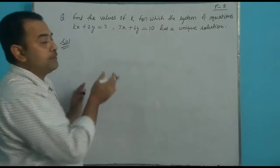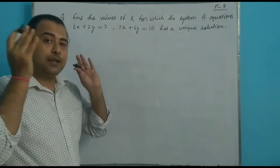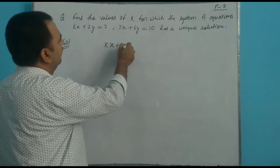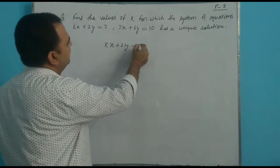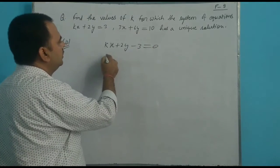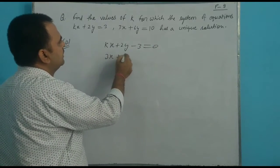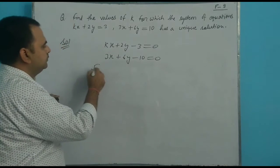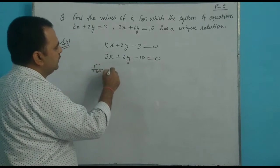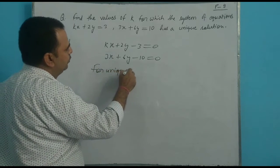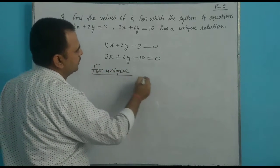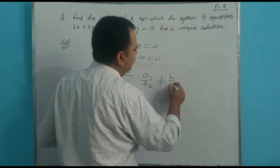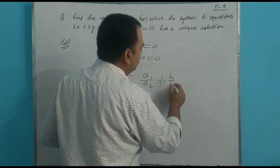We write the equations in standard form: kx plus 2y minus 3 equals 0, and px plus 6y minus 10 equals 0. For the unique solution condition, a1 upon a2 must not equal b1 upon b2.